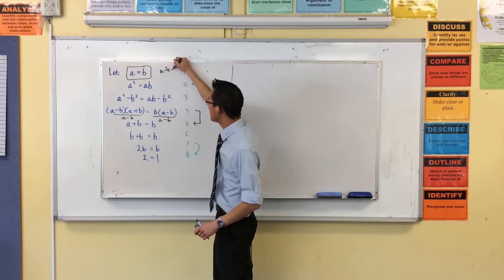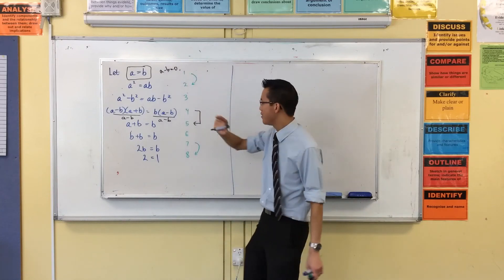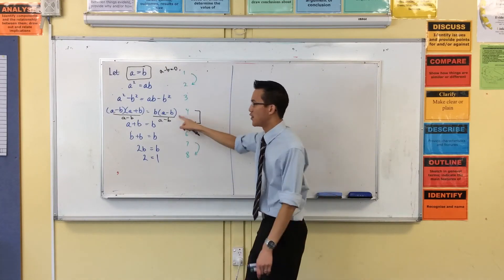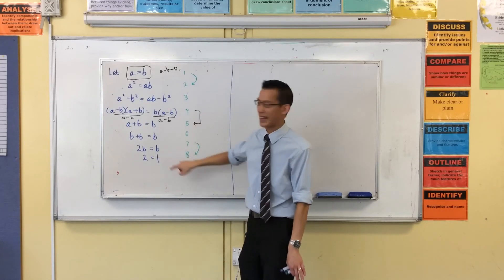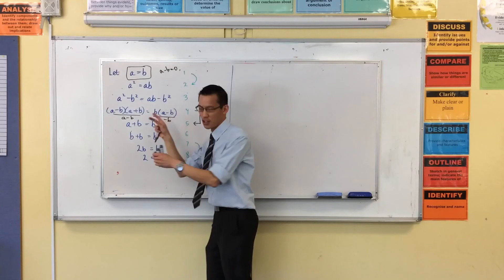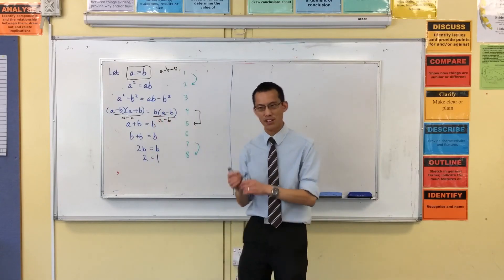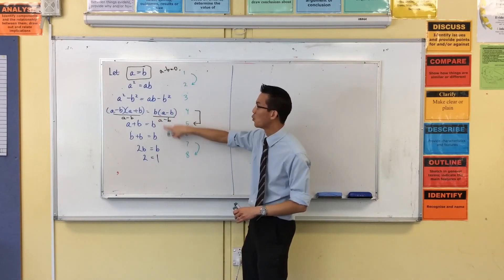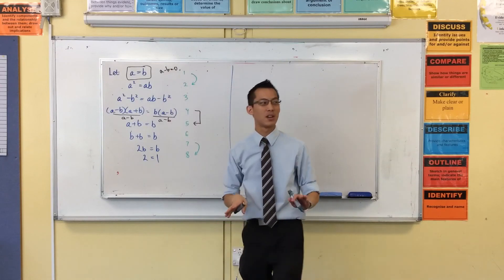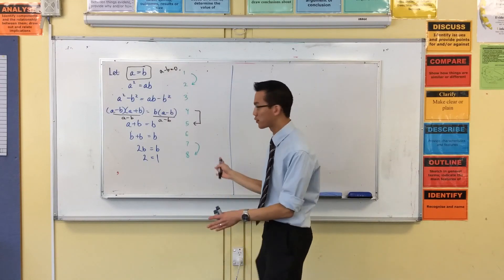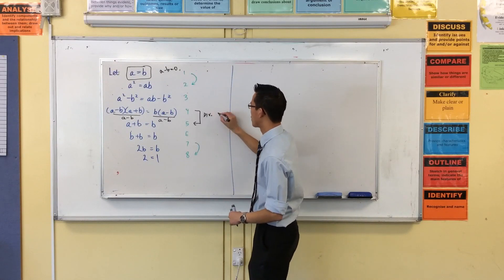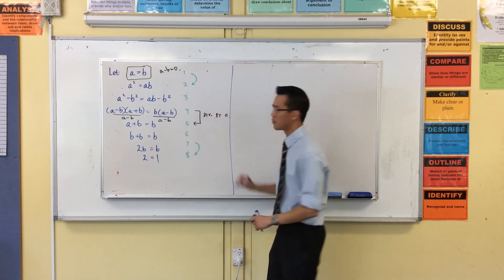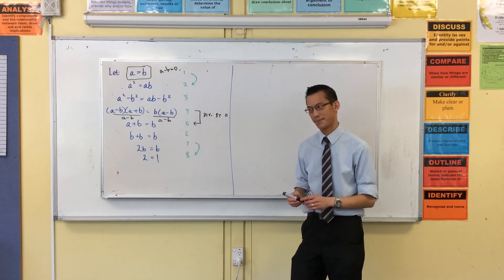And we've already looked at earlier this year the fact that division by zero causes logically inconsistent results. So sneaking division by zero into the logic, but doing it in a sort of subtle way that's not so obvious, that's the way a lot of these fallacy proofs work. So here's the problem. From line four to line five, division by zero is why it doesn't work.